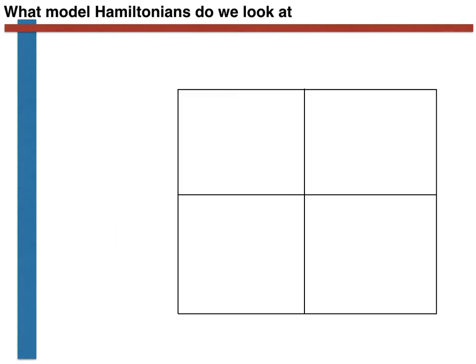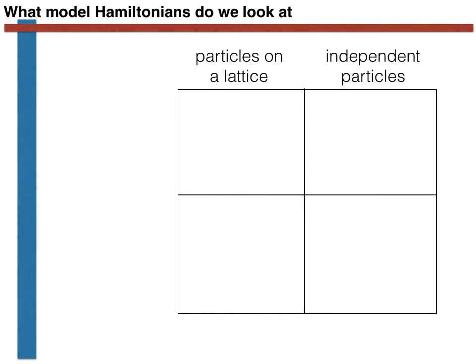Before we get on to calculating a partition function for an actual system, it is worth dwelling for a moment on the various model systems we will consider. When I think about the four types of model systems we will look at, I like to use the following matrix to classify them. The first distinction concerns whether the particles lie in a lattice, like the atoms in a solid, or whether the atoms are more free to move about, like the atoms in a gas.